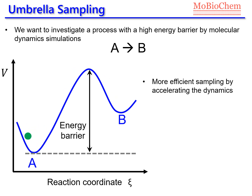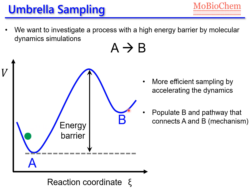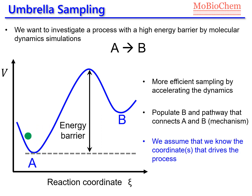So we need an efficient sampling technique in order to accelerate the dynamics, because we want to populate the region of the products — region B — and also, maybe even more important, we want to populate the pathway which connects the reactant region with the product region, because this pathway represents the reaction mechanism. In this lecture, we are going to assume that we know the reaction coordinate, because umbrella sampling is only useful in this situation.